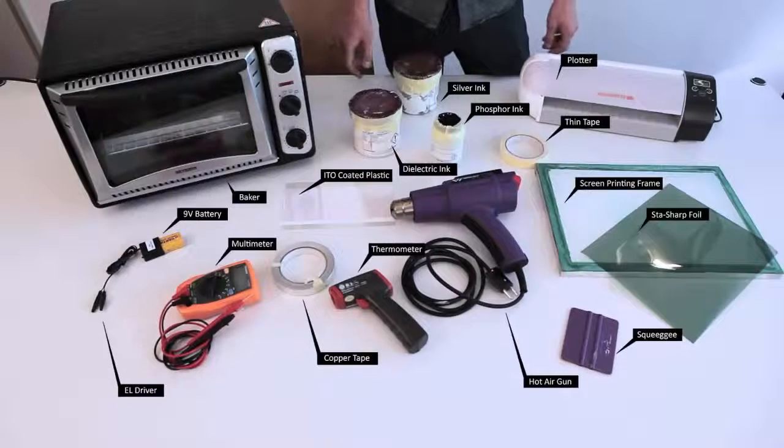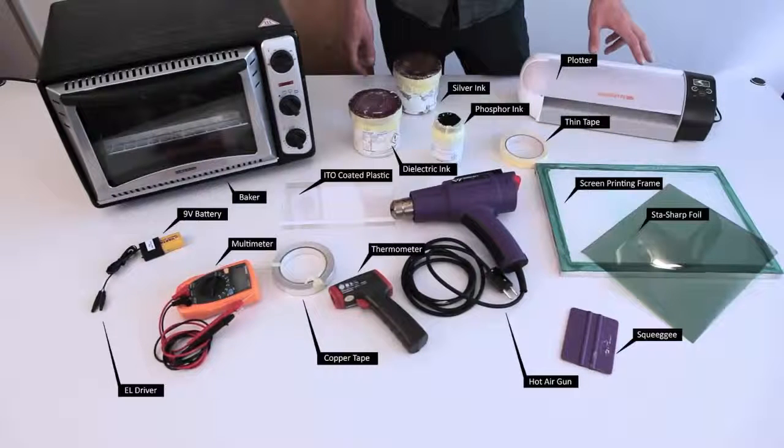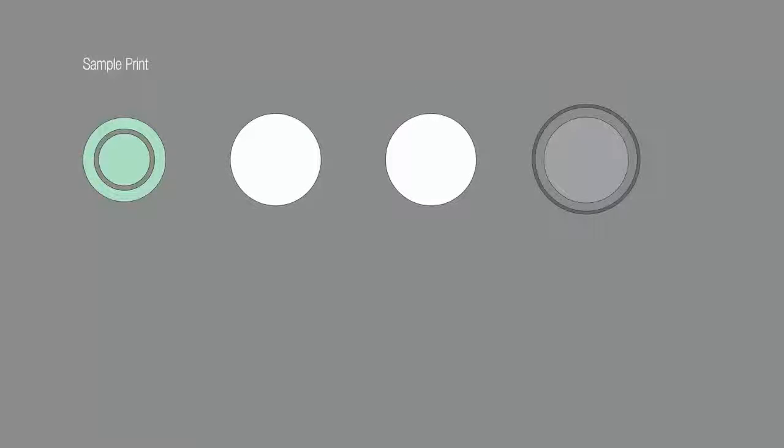For the first step, we'll be preparing the screen and screen printing materials. We'll be starting by making our designs for the print. On the left, you'll see the phosphor design. This is the basic part that will be illuminated on the screen.